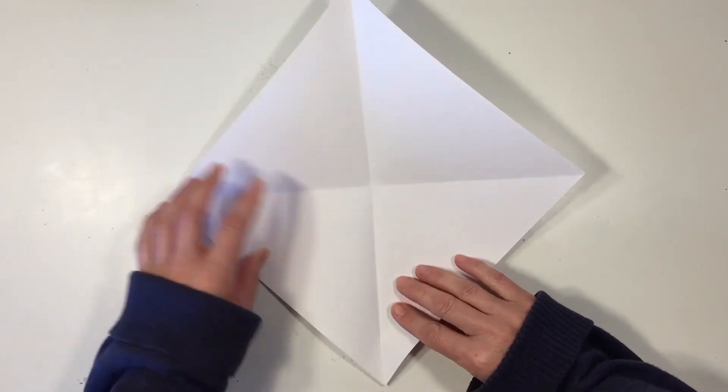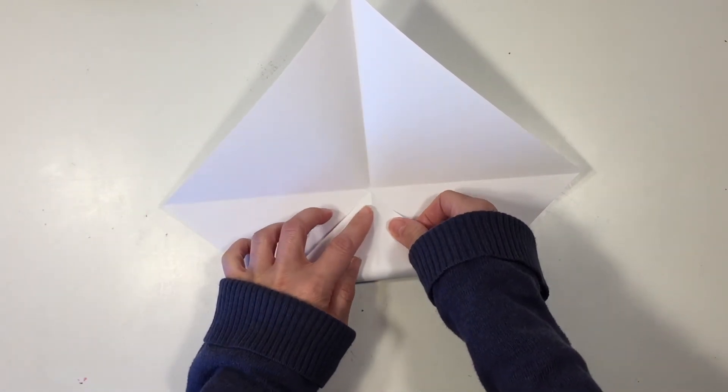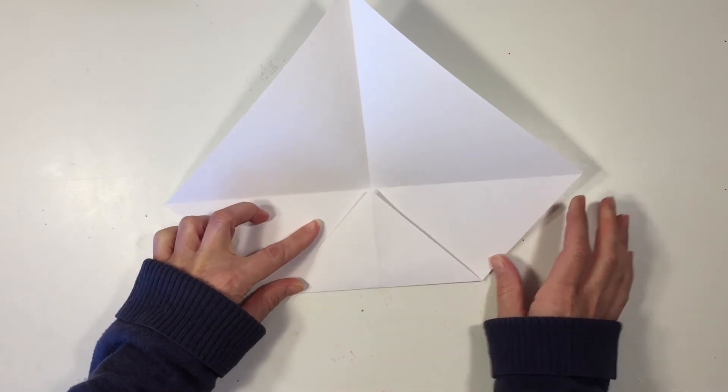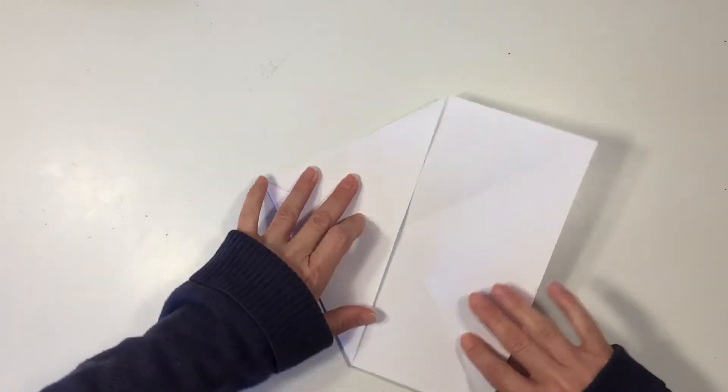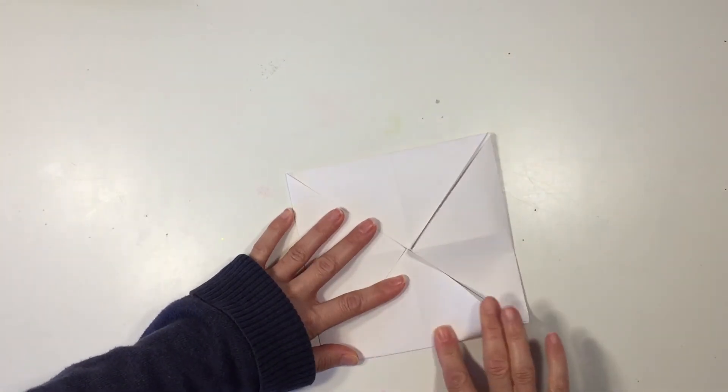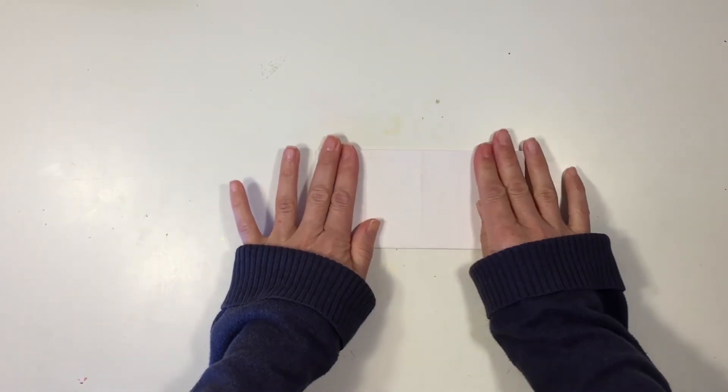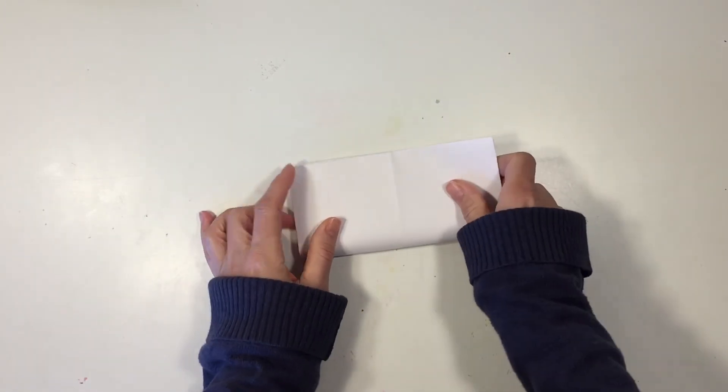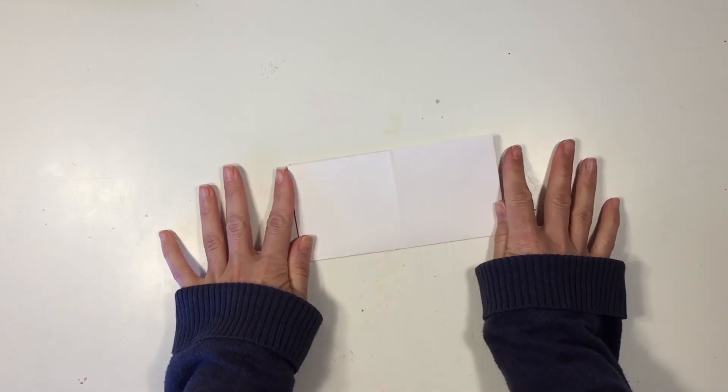Now you've created four triangles and you want to take each point and fold it into the center. Next you're going to fold each piece in half, and this is just so that it makes it easier to actually use the game.